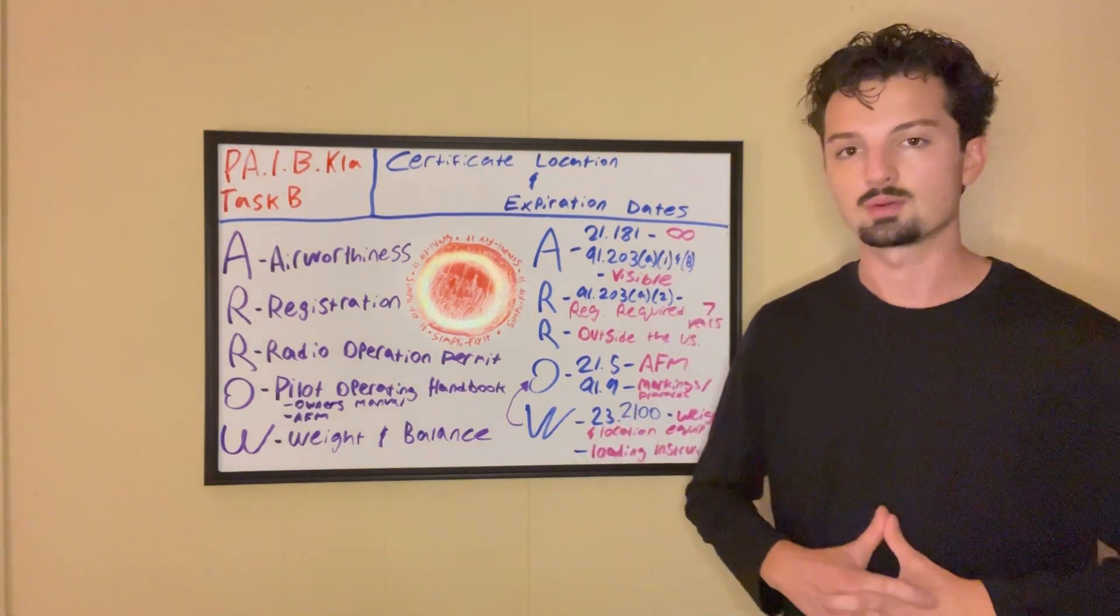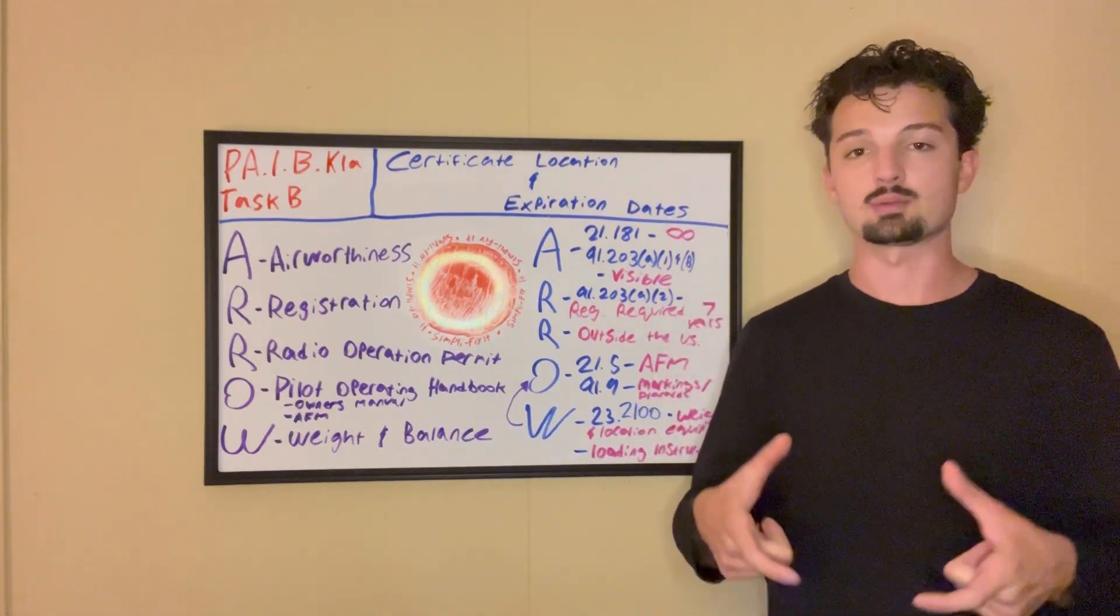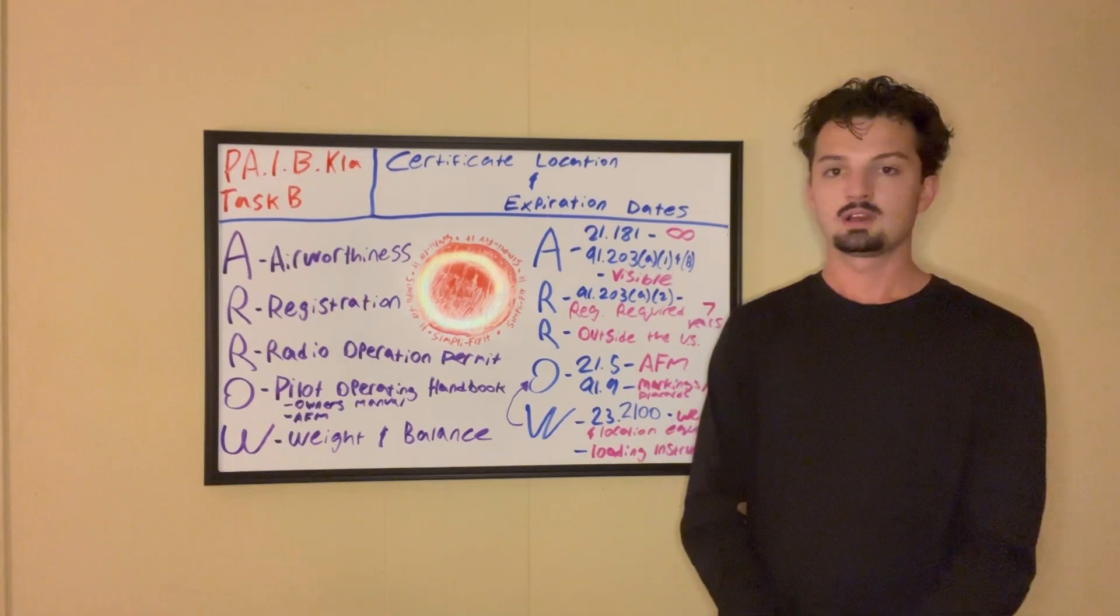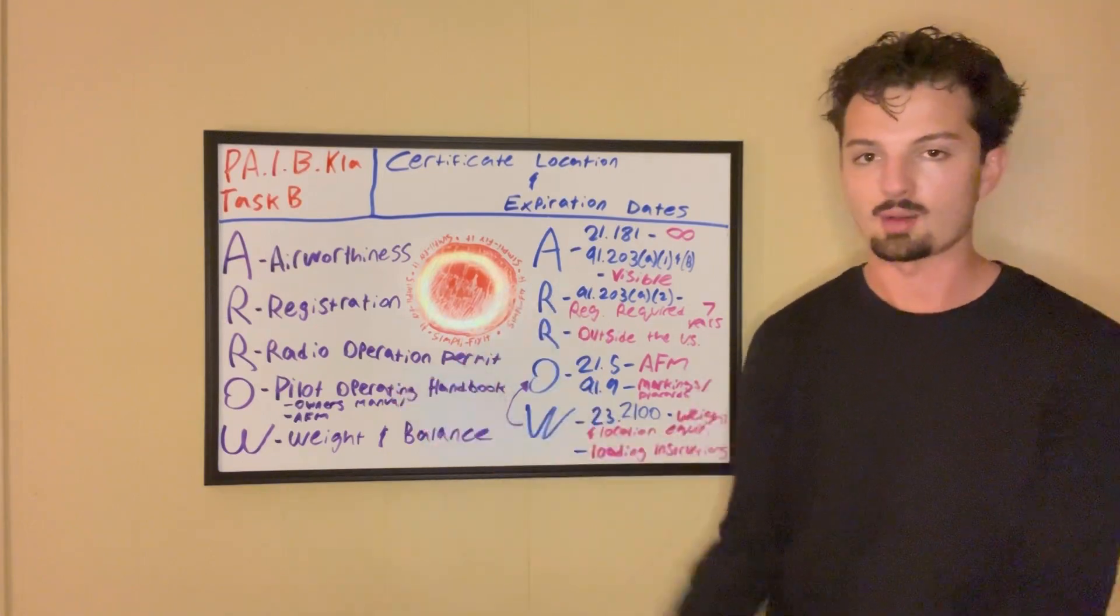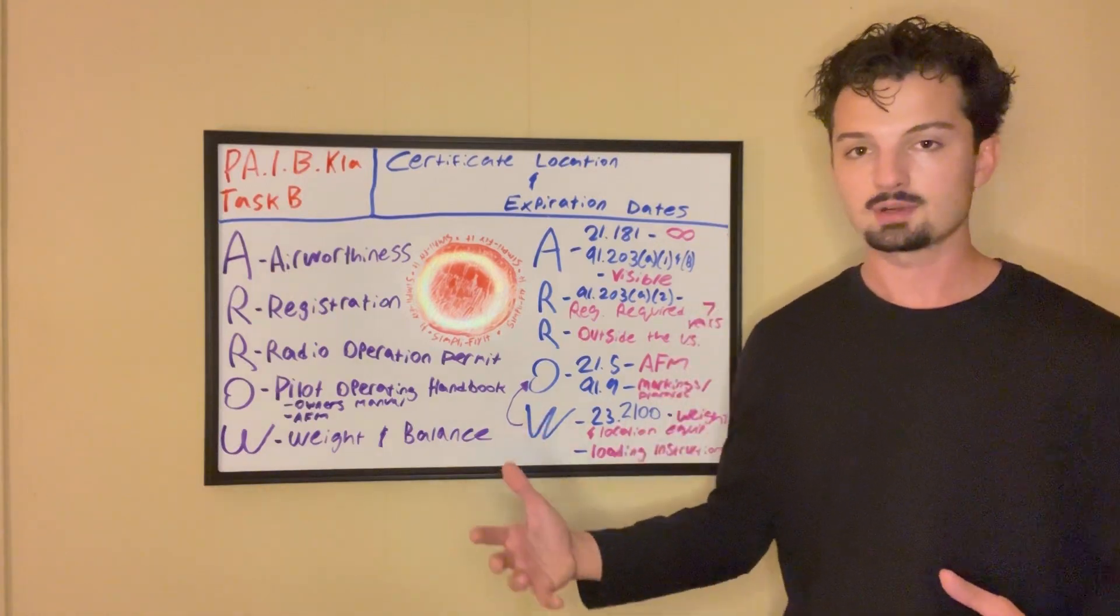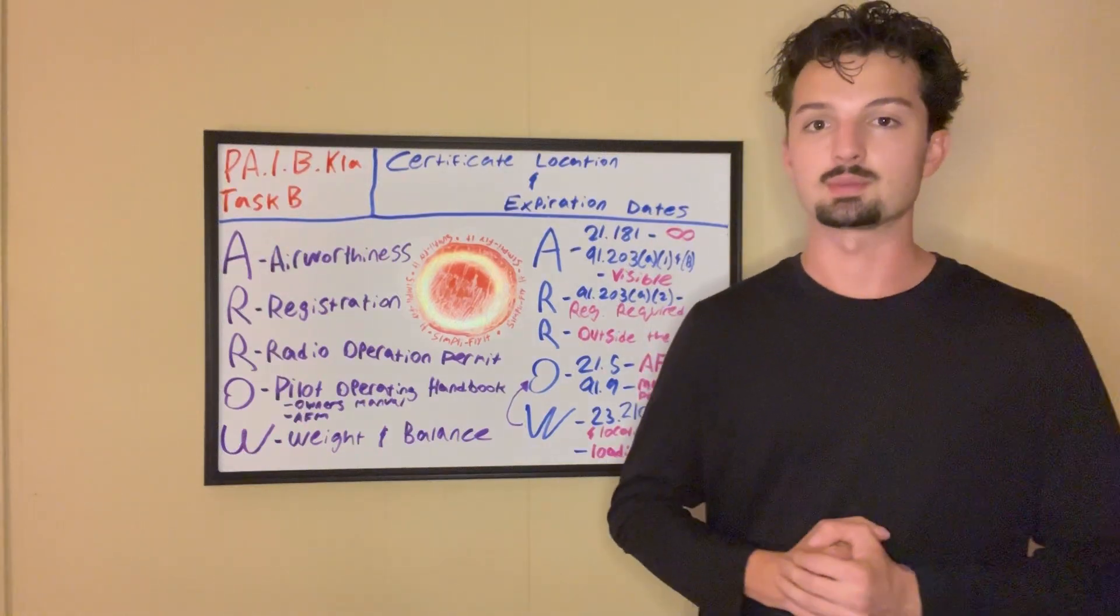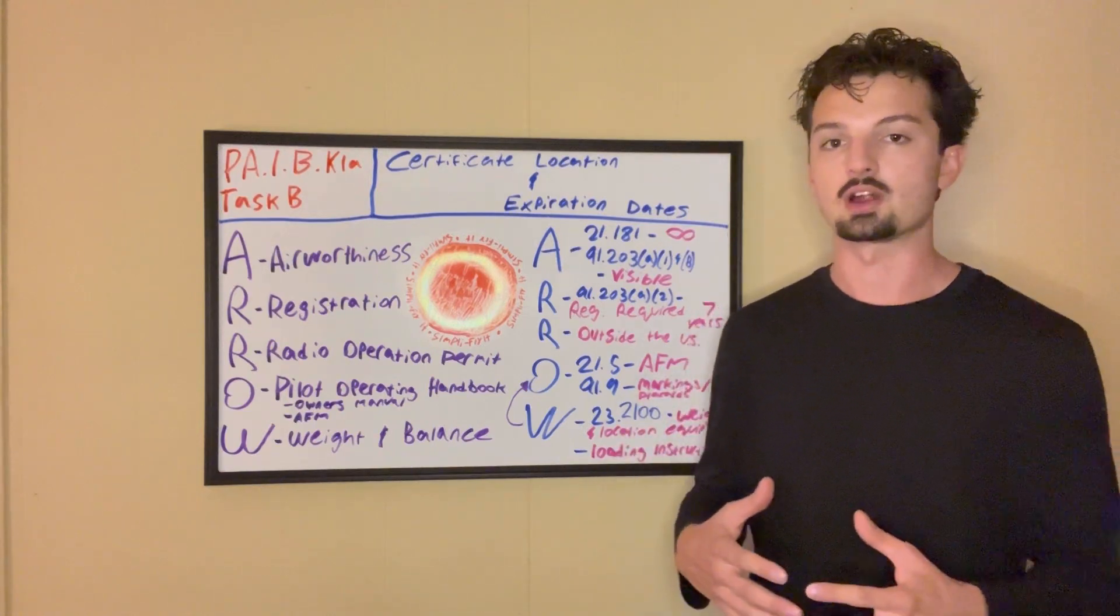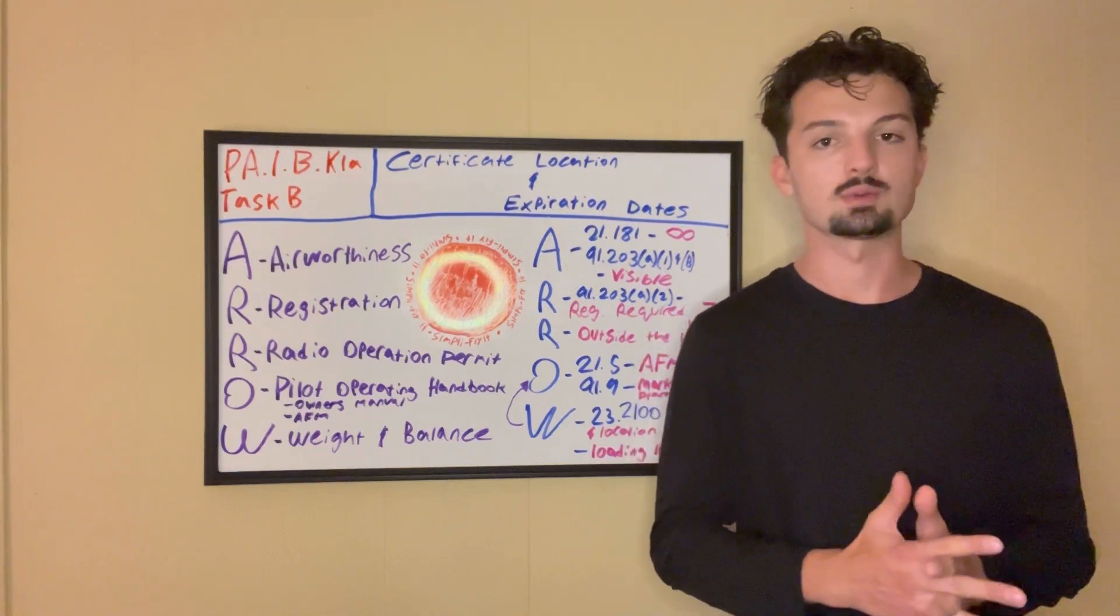So just a little review for our acronym. We've got A, airworthiness, which is our airworthiness certificate. It's got to be visible to all passengers and every plane's got to have it. R, we've got a registration certificate. Again, every plane's got to have it. It expires every seven years. Unlike the airworthiness, which never expires as long as we keep the plane airworthy, remember. Next, we've got our radio station operating license, which we don't need unless we want to go out of the country. Next, we got our pilot operating handbook or airplane flight manual, which is just information about our plane that we have to make sure is in our plane every time we go fly. And last, we have our official weight and balance information, which should be located within our POH or AFM. And we should be calculating it every time we go fly and every time we change the weight within our plane.